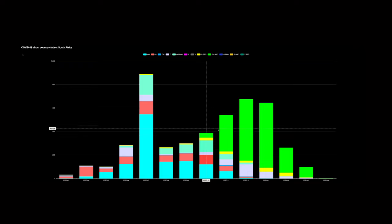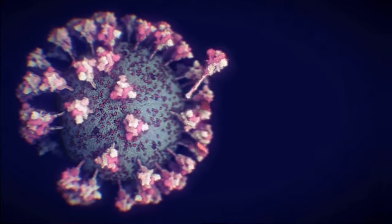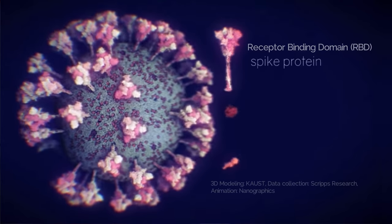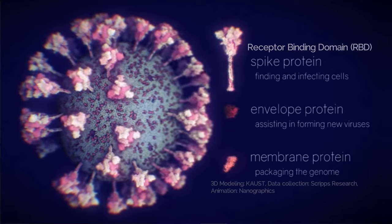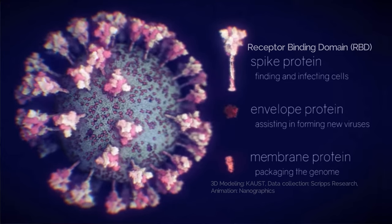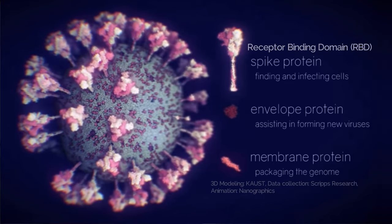There are some very important ones where mutations are appearing in the receptor binding domain, which is the region that allows the virus to enter into human cells. If some changes happen there in the receptor binding domain, it can increase the infectivity or disease severity, for example.